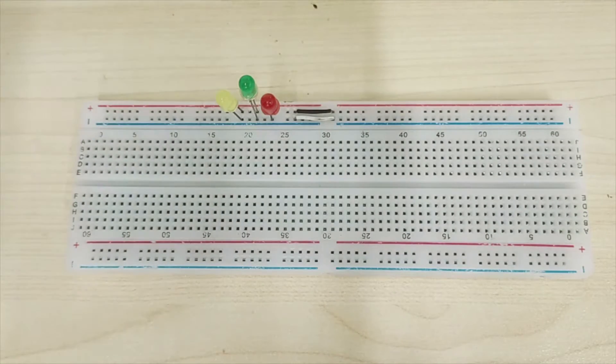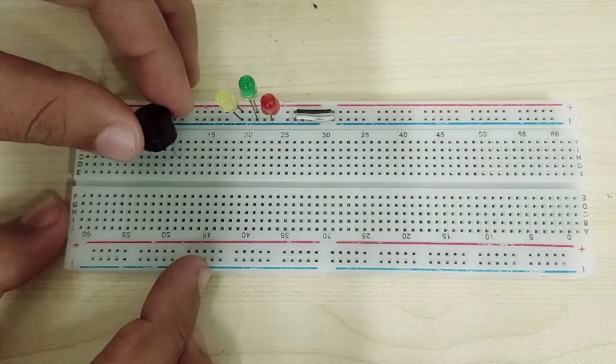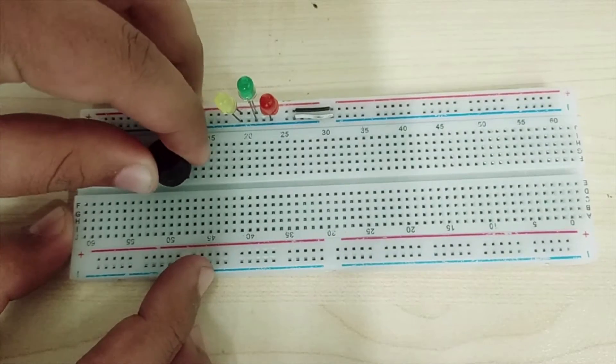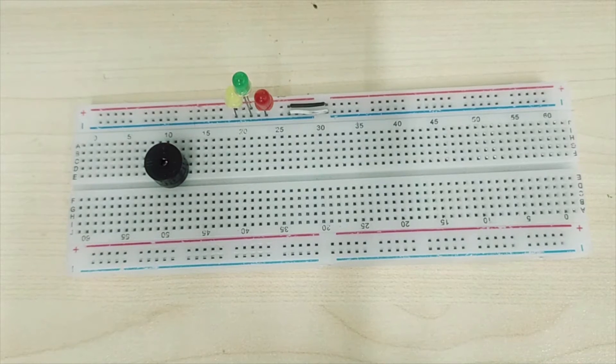Now we will take a buzzer and connect it to the breadboard. Now we will take two wires with the color of purple and blue. We will connect purple with the anode and blue with the cathode of the buzzer.